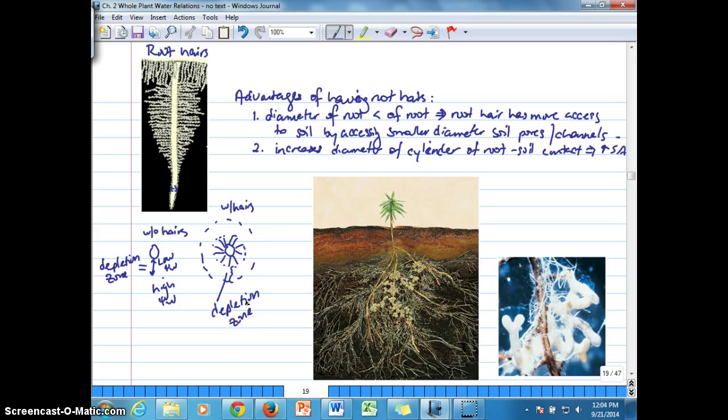That soil water potential extends even further out into the soil, accessing more sources of water because of establishing this water potential gradient than when the root has no root hairs. It has a smaller depletion zone.